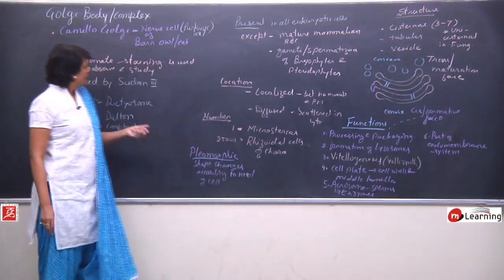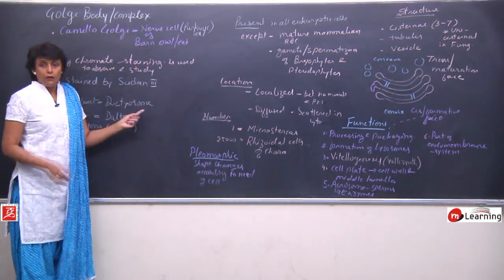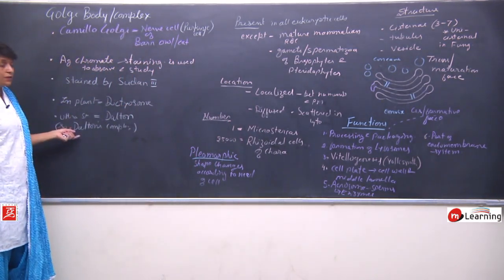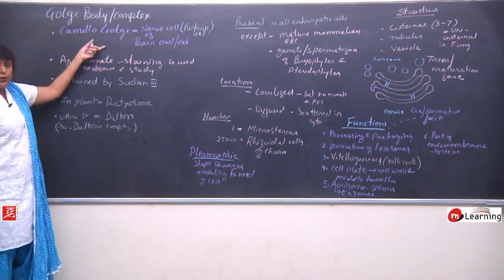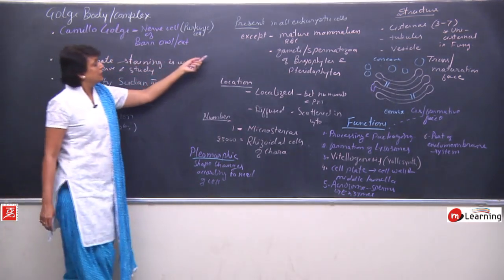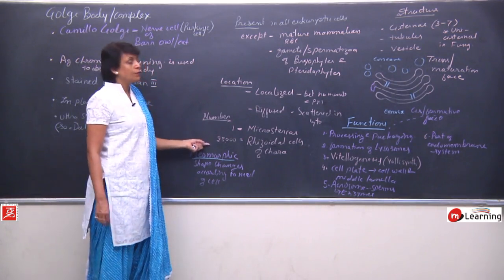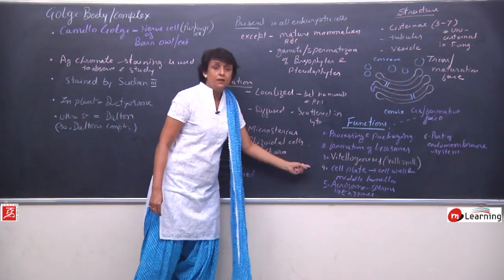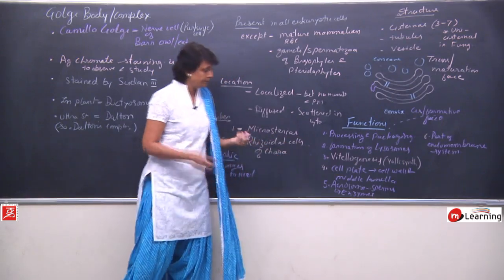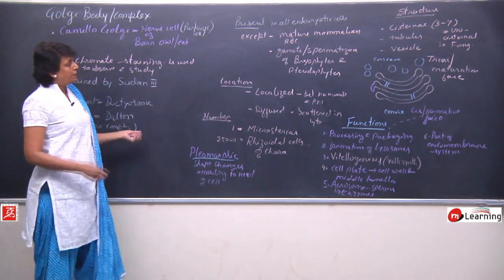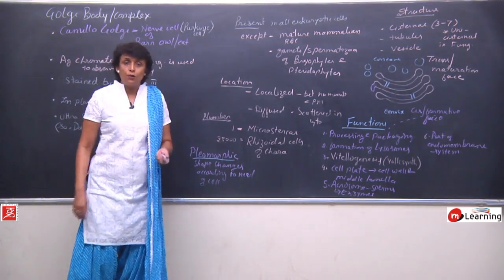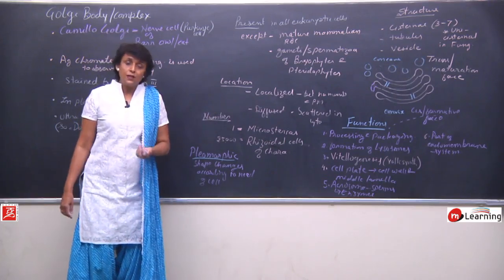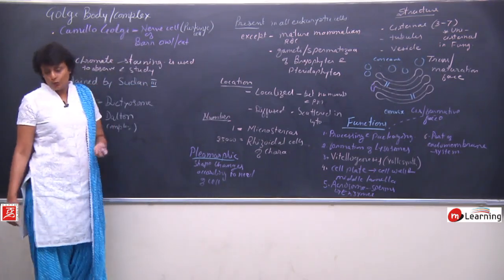So now we have covered everything about Golgi body — some historical things, who discovered it and who gave the structure, the structure itself with its three components, and the main functions. Up till now we are done with mitochondria, endoplasmic reticulum, and Golgi body. We will take up the next organelle, that is lysosome.